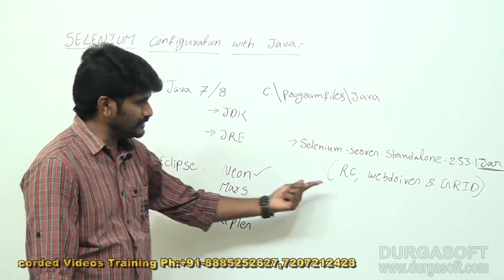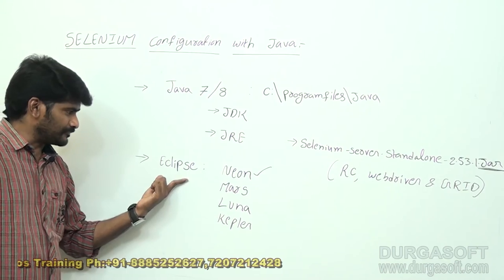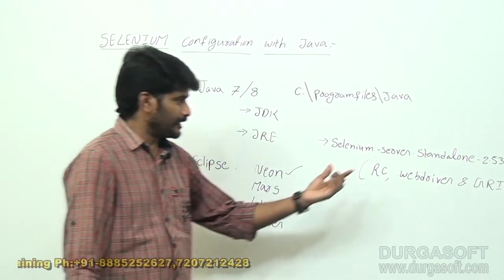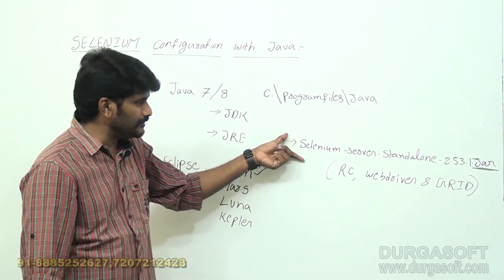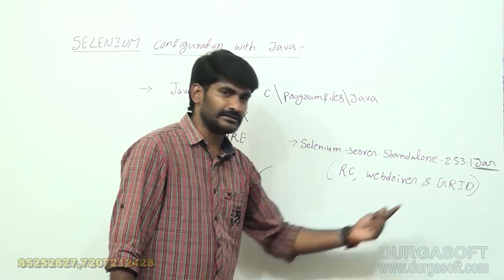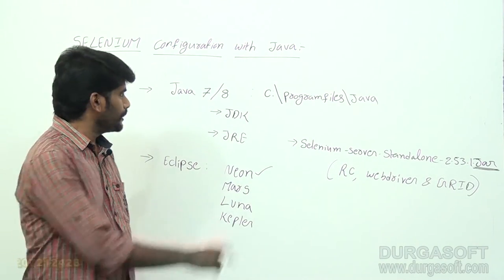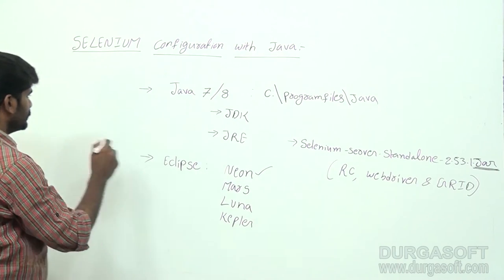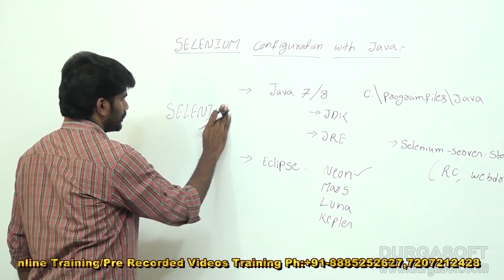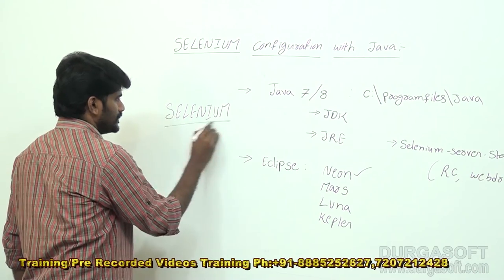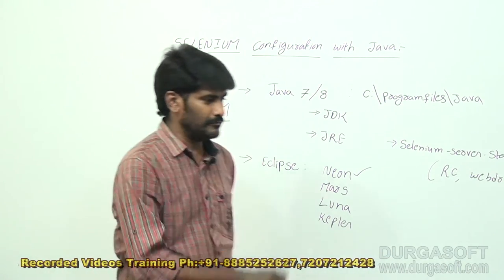We can download this JAR file — I will show the URLs and websites. First install Java, after that Eclipse is the editor where we write the program, and then this is the Selenium main file version 2.53.1 containing RC, WebDriver, and Grid. We have to configure all these three, then the Selenium tool is ready.